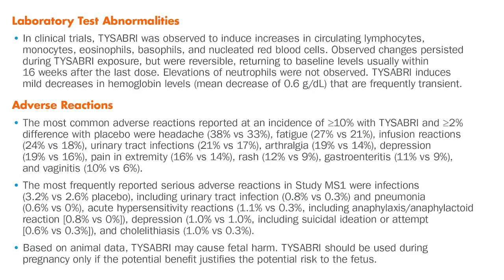Laboratory test abnormalities. In clinical trials, Tysabri was observed to induce increases in circulating lymphocytes, monocytes, eosinophils, basophils, and nucleated red blood cells. Observed changes persisted during Tysabri exposure but were reversible, returning to baseline levels usually within 16 weeks after the last dose. Elevations of neutrophils were not observed. Tysabri induces mild decreases in hemoglobin levels, with a mean decrease of 0.6 grams per deciliter, that are frequently transient.